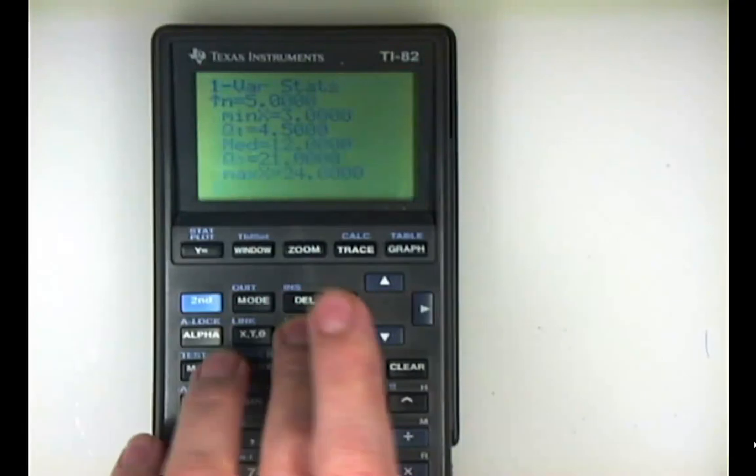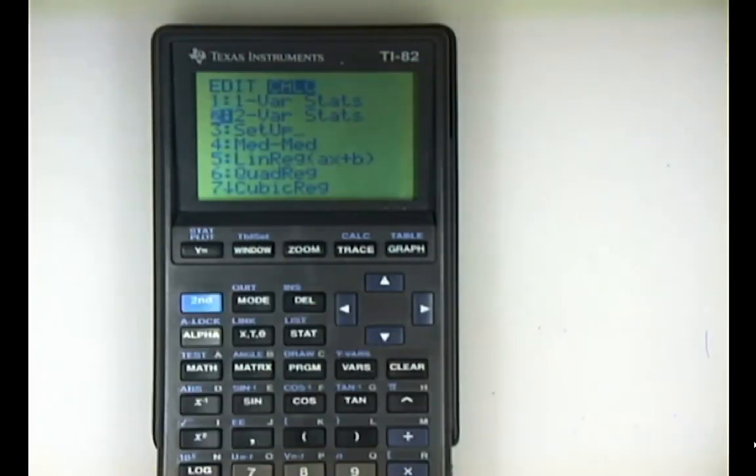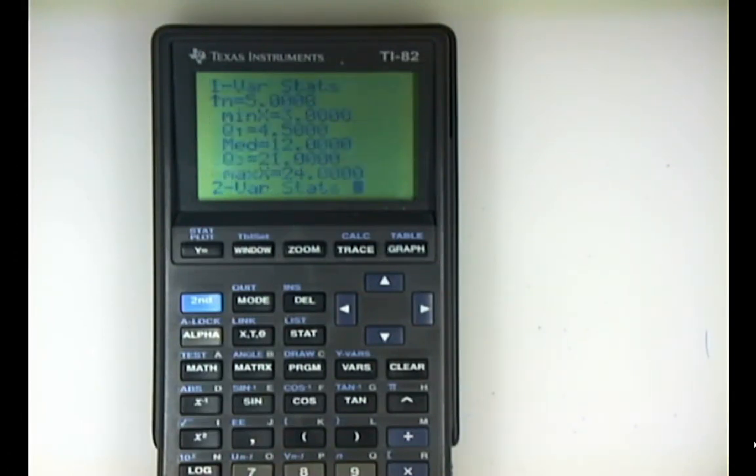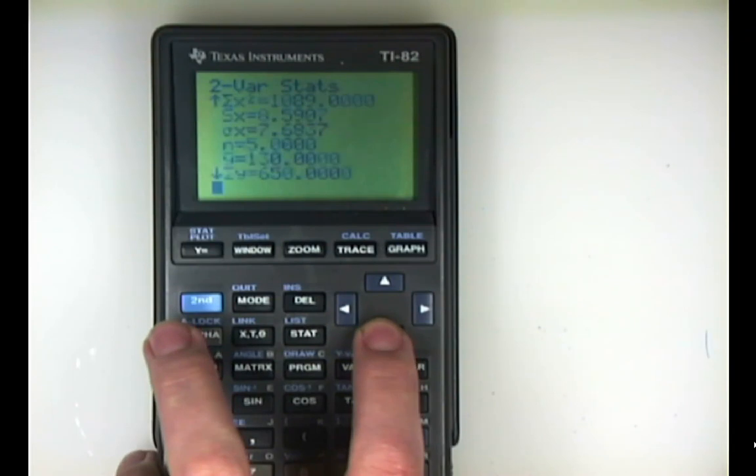You can also bring up two-variable statistics in a similar method. This is when you have two variables, an x variable and a y variable. It's prompting me for list names. I'm going to tell it x is in list one and then use the comma key to tell it y is in list two, then hit enter.